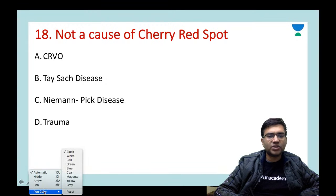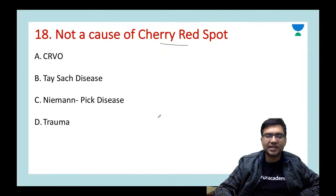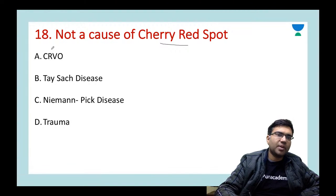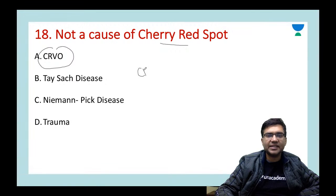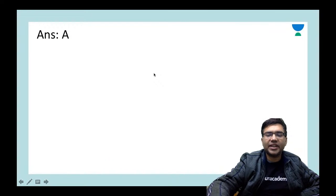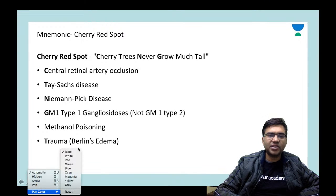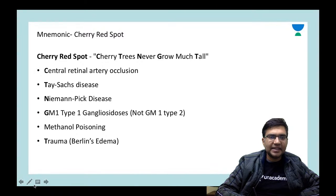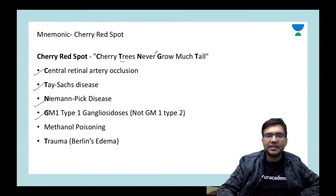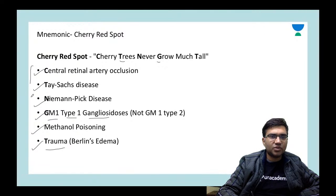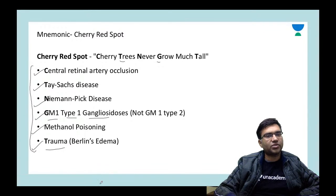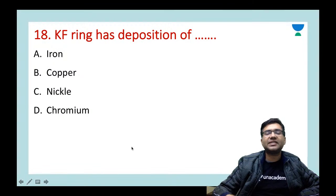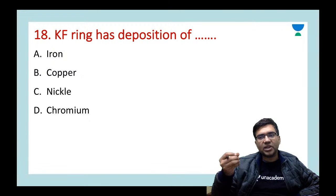Next question: which is NOT a cause of cherry red spot? Options: CRVO, Tay-Sachs disease, Niemann-Pick disease, or trauma. The answer is A — CRVO. Cherry red spot is seen in CRAO (not CRVO). Remember the mnemonic 'Cherry Trees Never Go Much Tall': C = central retinal artery occlusion, T = Tay-Sachs, N = Niemann-Pick, G = GM1 type 1 gangliosidosis, M = methanol poisoning, T = trauma.